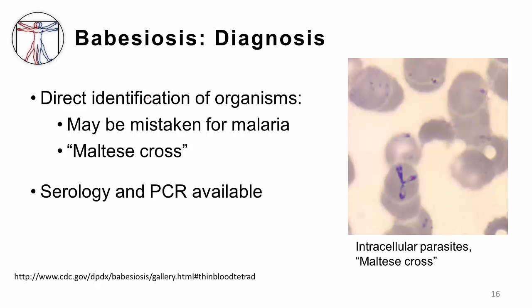Diagnosis, like malaria, is often made by finding the organism under the blood smear, and for those who are not thinking about it, sometimes they'll be mistaken for malaria. You can see here this classic Maltese cross intracellular arrangement, which is quite classic for babesiosis. There's also serological testing, like antibody testing or PCR testing, which is available.